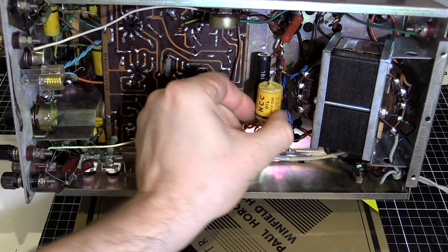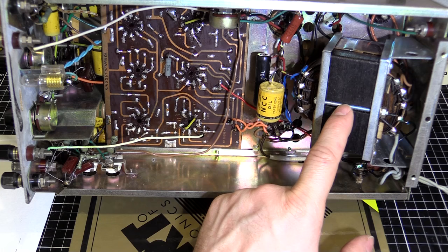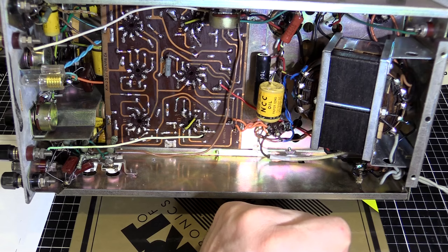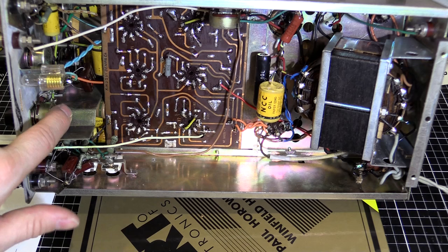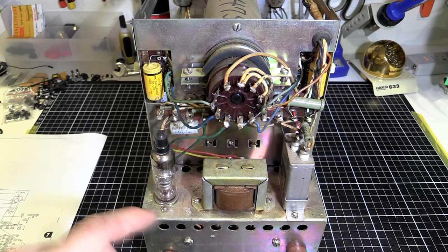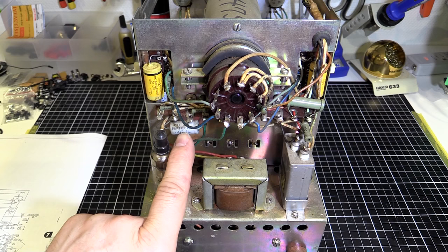Main power transformer here - that'll be giving us our 6.3 volts for our filaments and the schematic actually says 350 volts, 6.3 volts, that sort of thing. And then all the pots up here which I'll be cleaning with the Deoxit because they're a bit crunchy. If they don't come good, I'll just replace them. They're just standard pots.